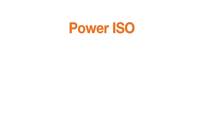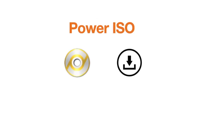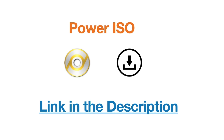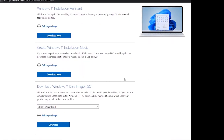Then we need to create a bootable Windows 11 pen drive. To create a bootable ISO USB, download the software PowerISO. Check the link in the description to learn how to create a bootable Windows pen drive using PowerISO, or you can use Microsoft's own Media Creation Installer software to create a bootable USB.